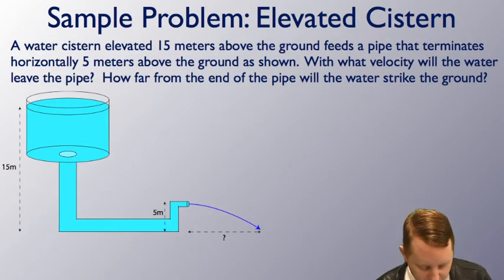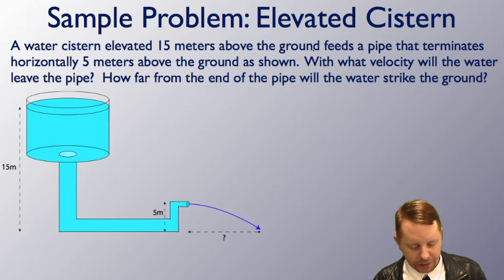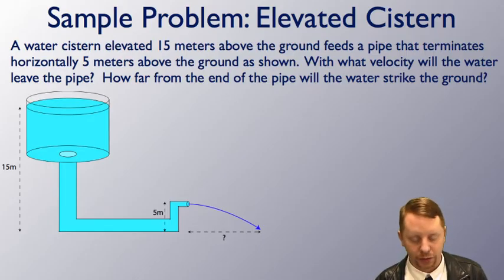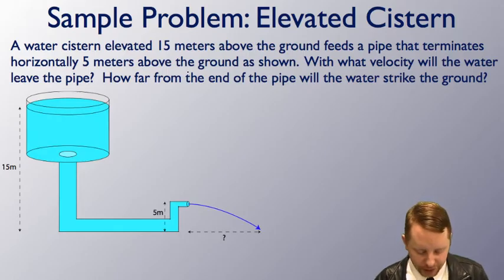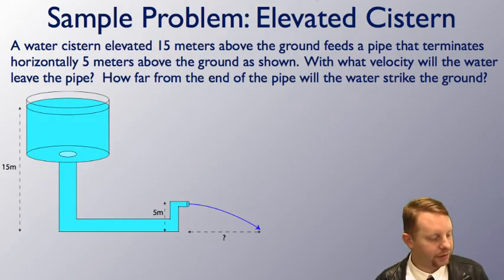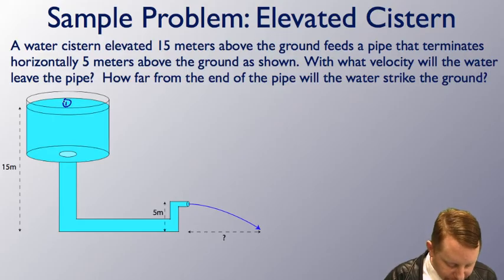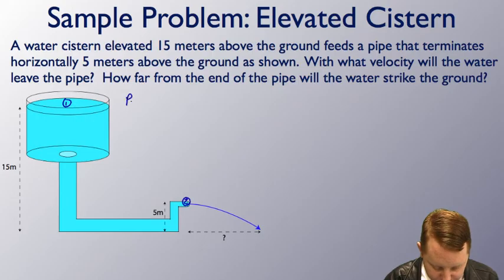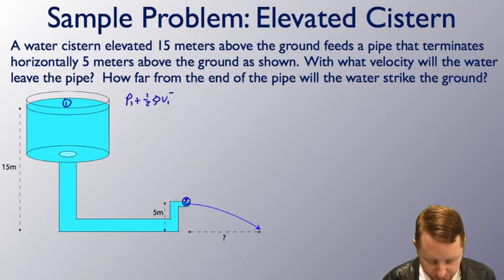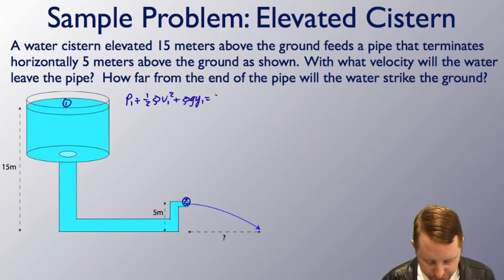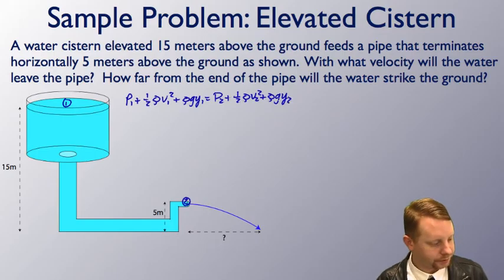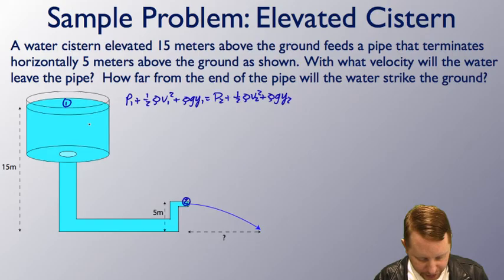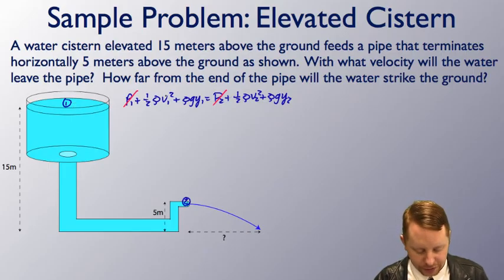Let's take a look at one more problem. A water cistern is elevated 15 meters above the ground, and it feeds a pipe that terminates horizontally 5 meters above the ground as shown. With what velocity will the water leave the pipe, and how far from the end of the pipe will the water strike the ground? Well, let's take this piece by piece. With what velocity will the water leave the pipe? That sounds like a Bernoulli's equation sort of problem. Let's call this area 1, and that's region 2. So p1 plus 1 half rho v1 squared plus rho gy1 must equal p2 plus 1 half rho v2 squared plus rho gy2. And we can do a couple simplifications again. p1 and p2 are both open to atmosphere, so those we can subtract out. v1, let's assume that's pretty close to 0, so that term will go away.